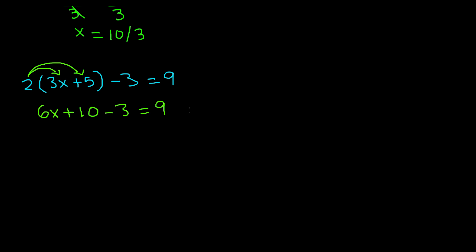Now once again, we need to combine like terms. In this case, we have positive 10 and negative 3. So we know positive 10 and negative 3 is the same thing as 10 minus 3, which is 7. So we get 6x plus, because it's a positive 7, because we take the sign of the greater number. So we have plus, and then 10 minus 3, 7 is equal to 9. Now once again, we have a two-step equation.